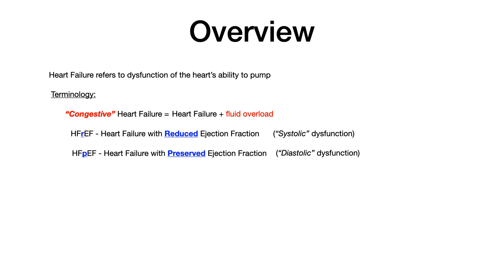HFrEF is heart failure with reduced ejection fraction. Historically, this was referred to as systolic dysfunction, but it has been renamed HFrEF because of the reduced ejection fraction. HFpEF — the P stands for preserved — is heart failure with preserved ejection fraction. The terminology was changed because it's not only systolic or only diastolic dysfunction; oftentimes heart failure has elements of both. The more scientifically correct terminology is to talk about the change in ejection fraction, whether it's reduced or preserved.